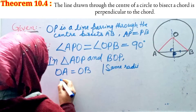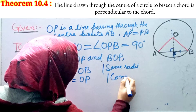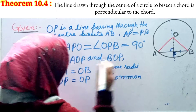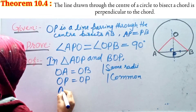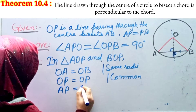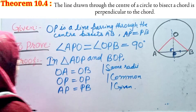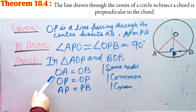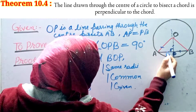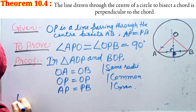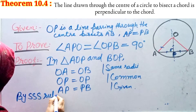OP equals OP — common side. And AP equals PB — given. So by the SSS (Side-Side-Side) rule, triangle AOP is congruent to triangle BOP.